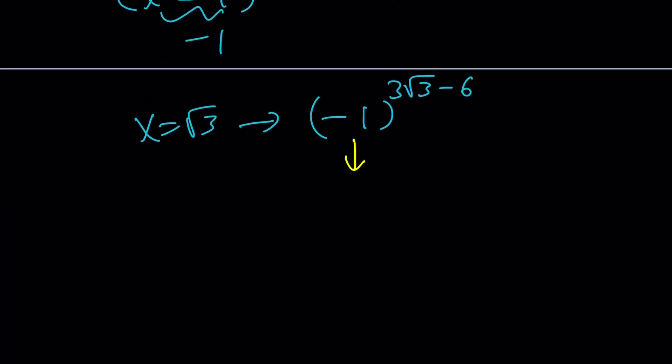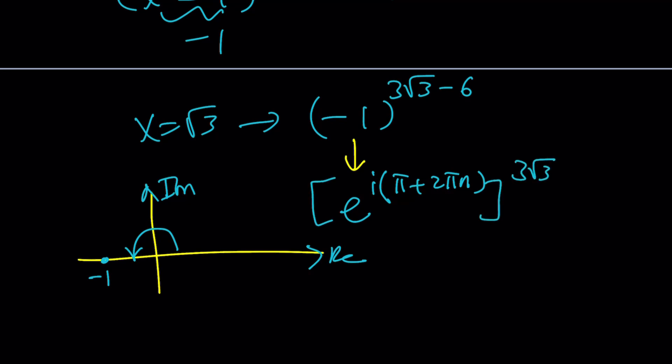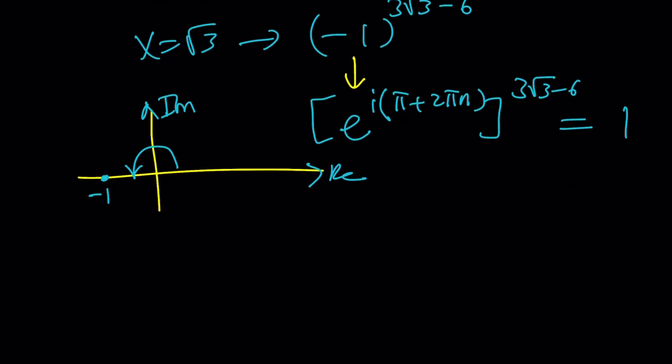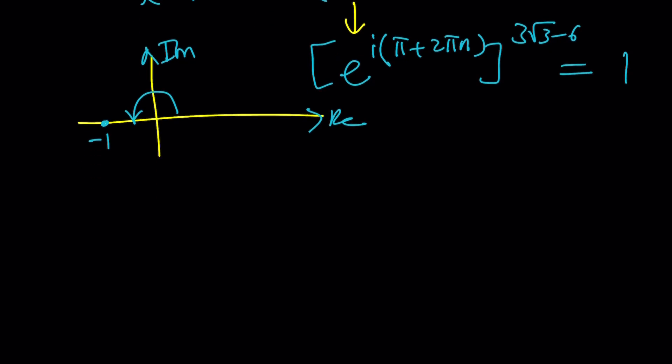With the complex world, we can write it as follows. Since negative 1 is represented by a number that's on the real axis, that's a real number, it has no imaginary parts. Its angle or argument can be defined as pi, but we're allowed to add multiples of 2 pi to it. In other words, this can be written as e to the power i times pi plus 2 pi n. That is negative 1. And I want to raise it to the power 3 root 3 minus 6. And I want this to be 1.